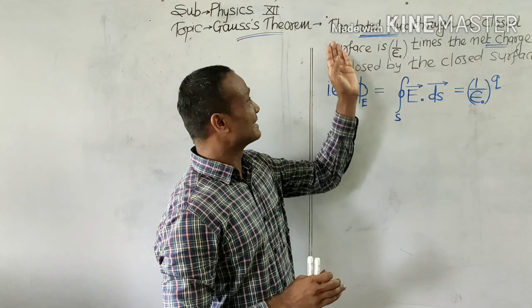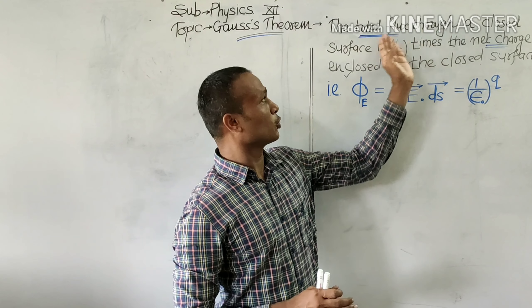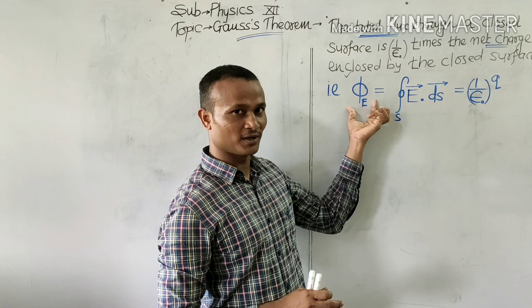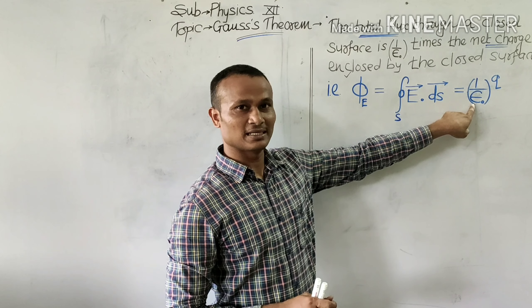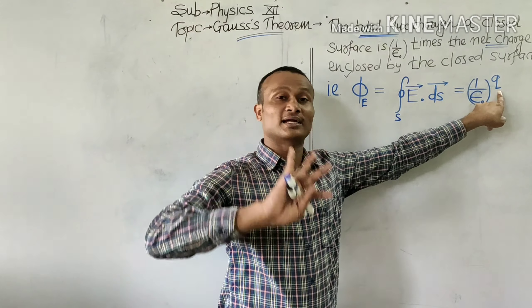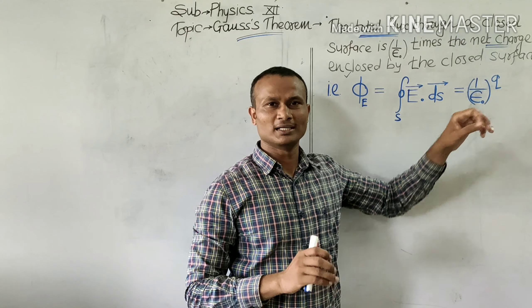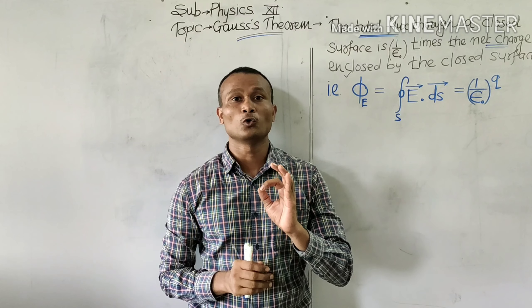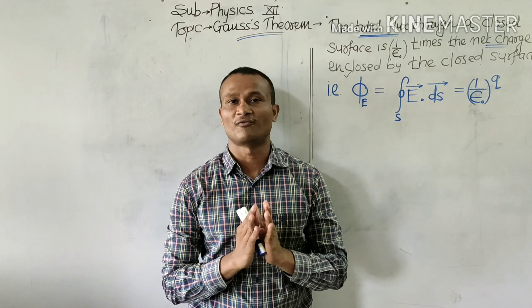I repeat once again, the net flux through a closed surface, the total flux through a closed surface is 1 by epsilon naught times the net charge enclosed by that closed surface. So it's very clear that Gauss's theorem is applicable to only enclosed surfaces.